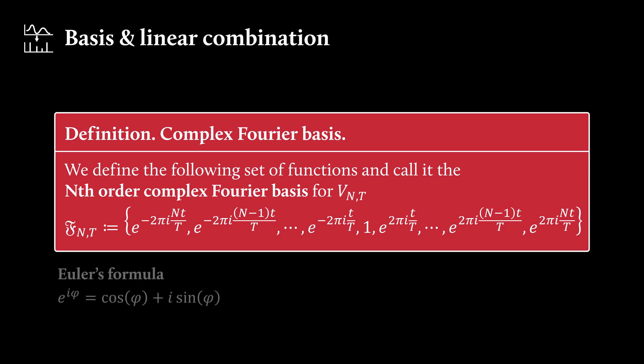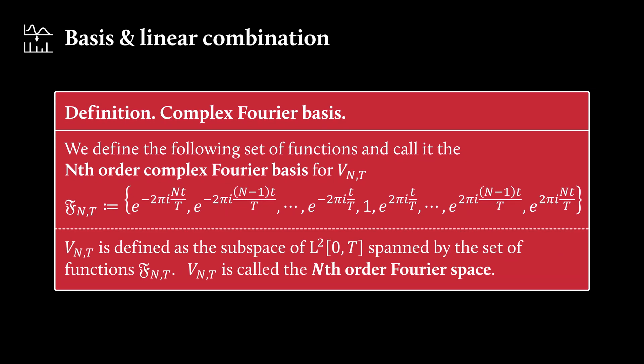And by Euler's formula, you know that these exponential functions are basically sine and cosine terms. So the basis here consists of these pure tones, these trigonometric functions. And then vₙₜ is defined as the subspace of L2 spanned by the set of functions fₙₜ that we've just defined. And this space v is called the nth order Fourier space.